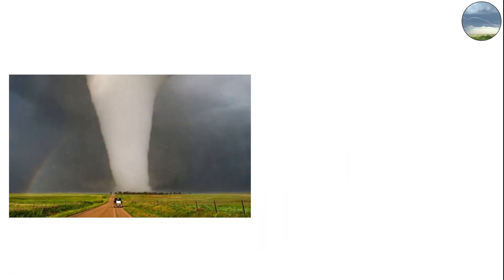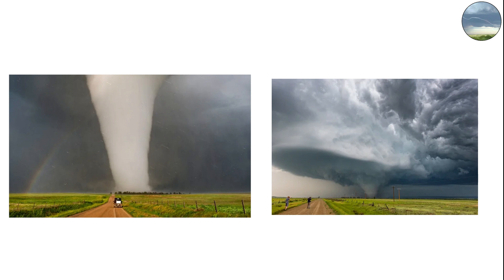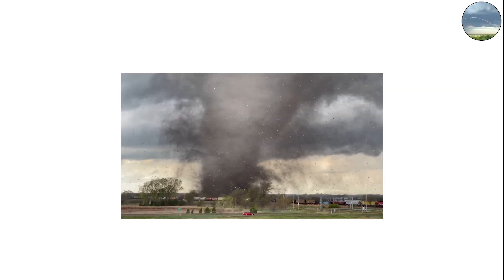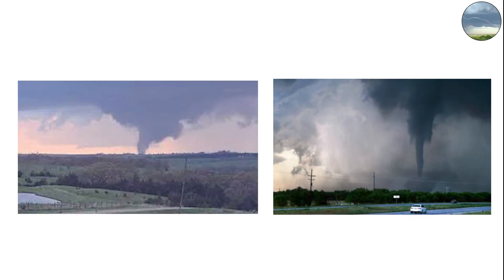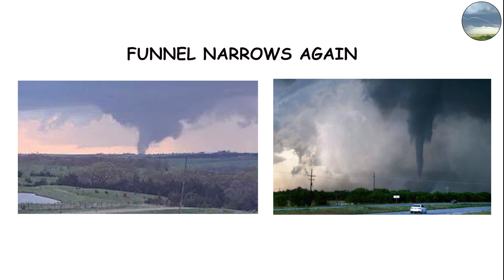As the tornado matures, the pressure drop intensifies and the funnel can grow wider. But when it starts to weaken, the circulation loses strength and the funnel narrows again, forming that iconic rope shape as it dissipates.